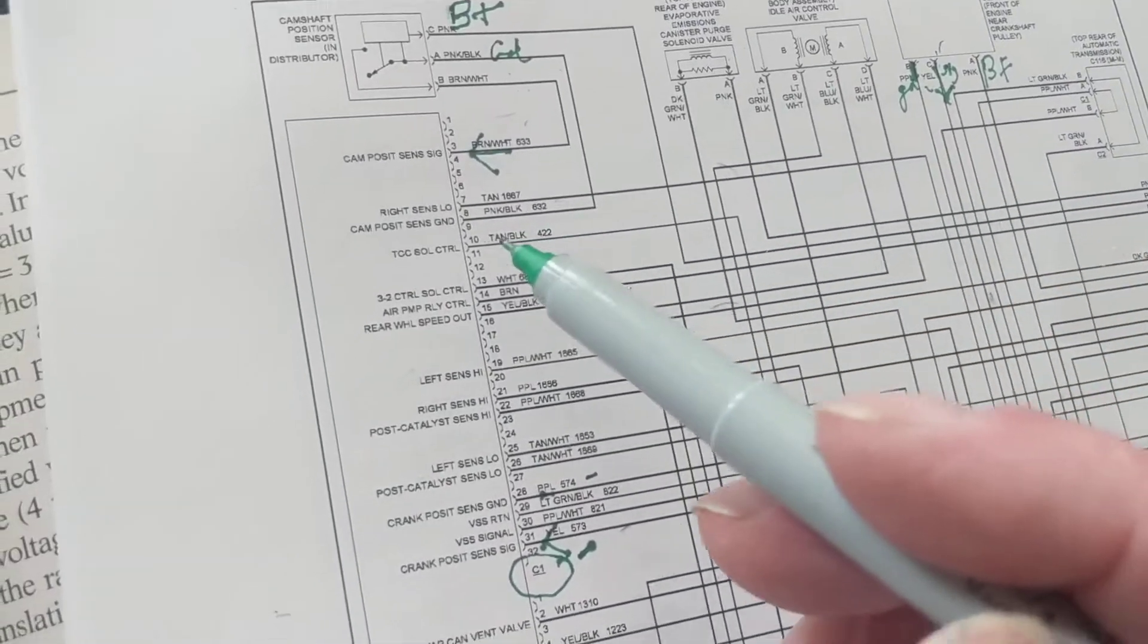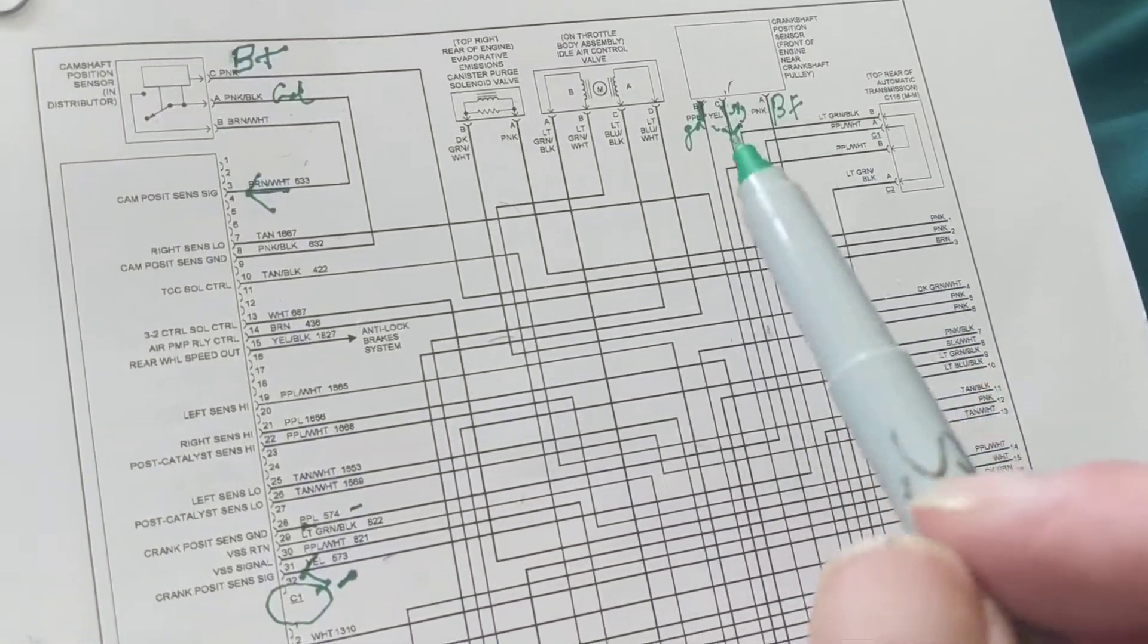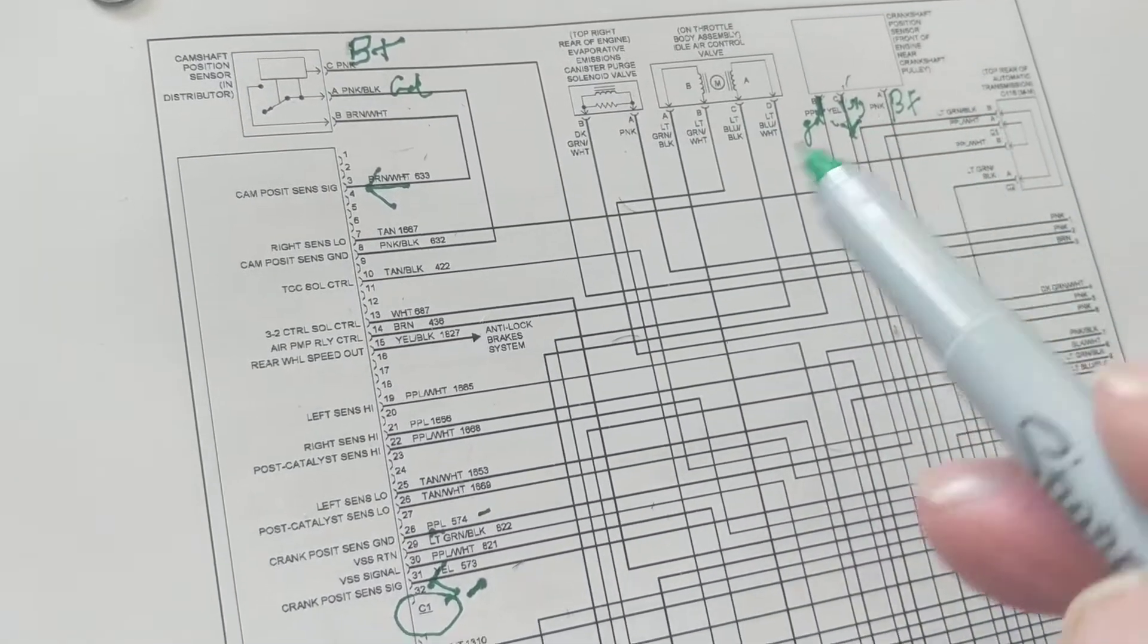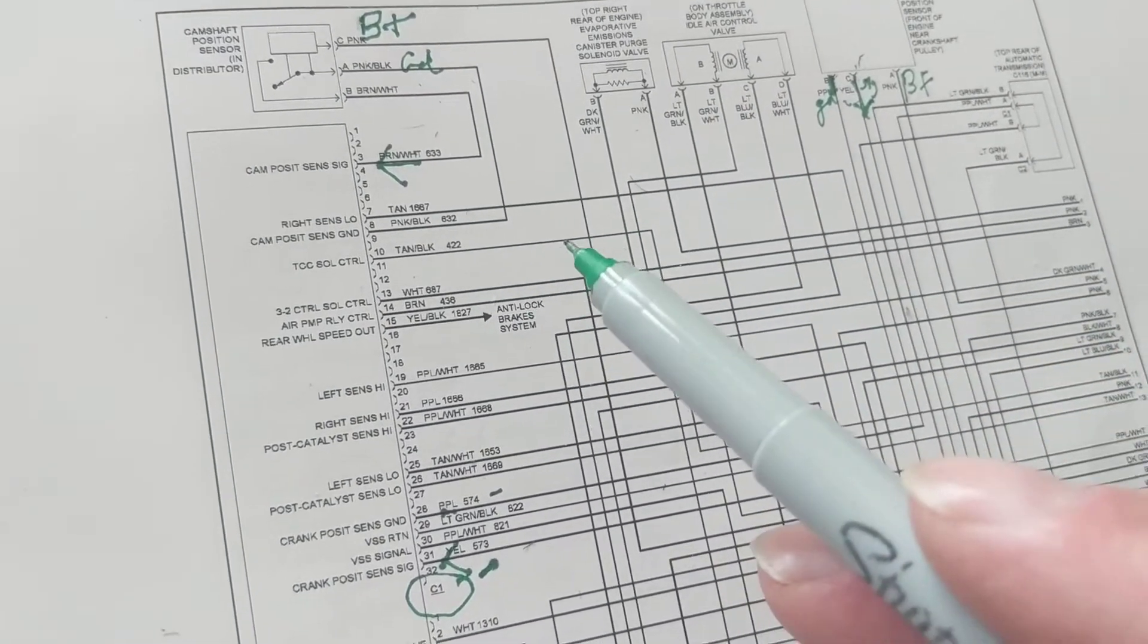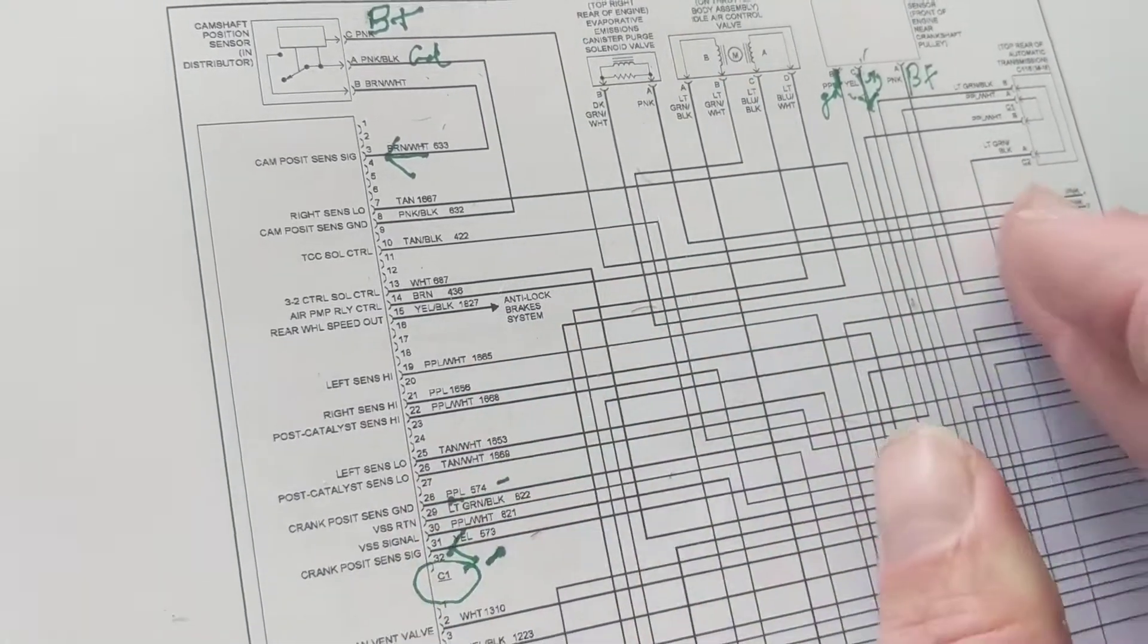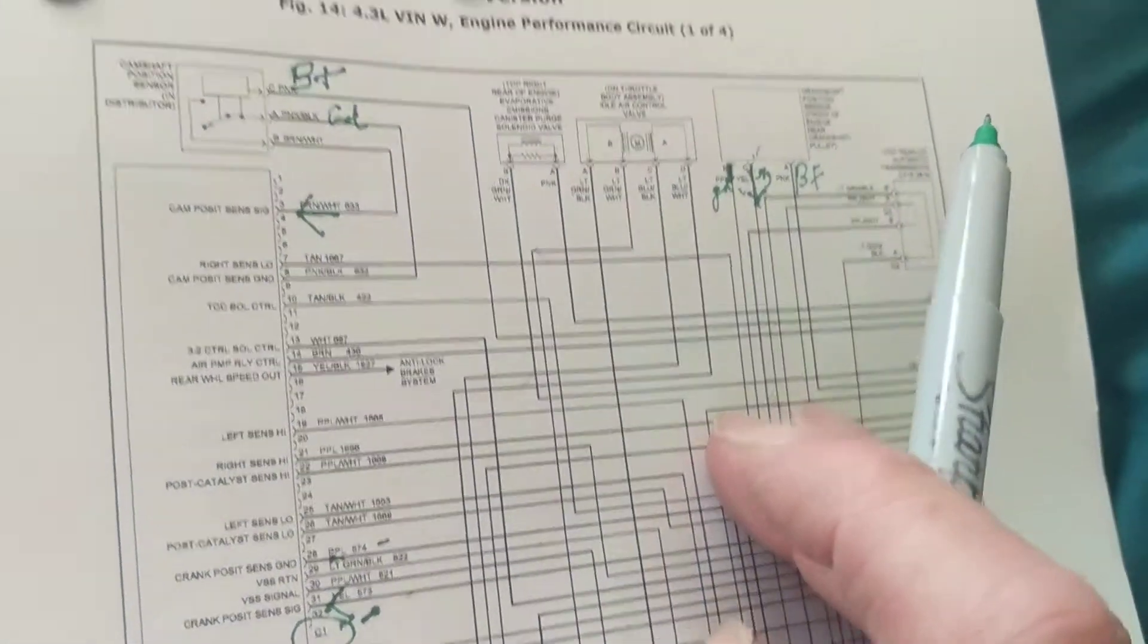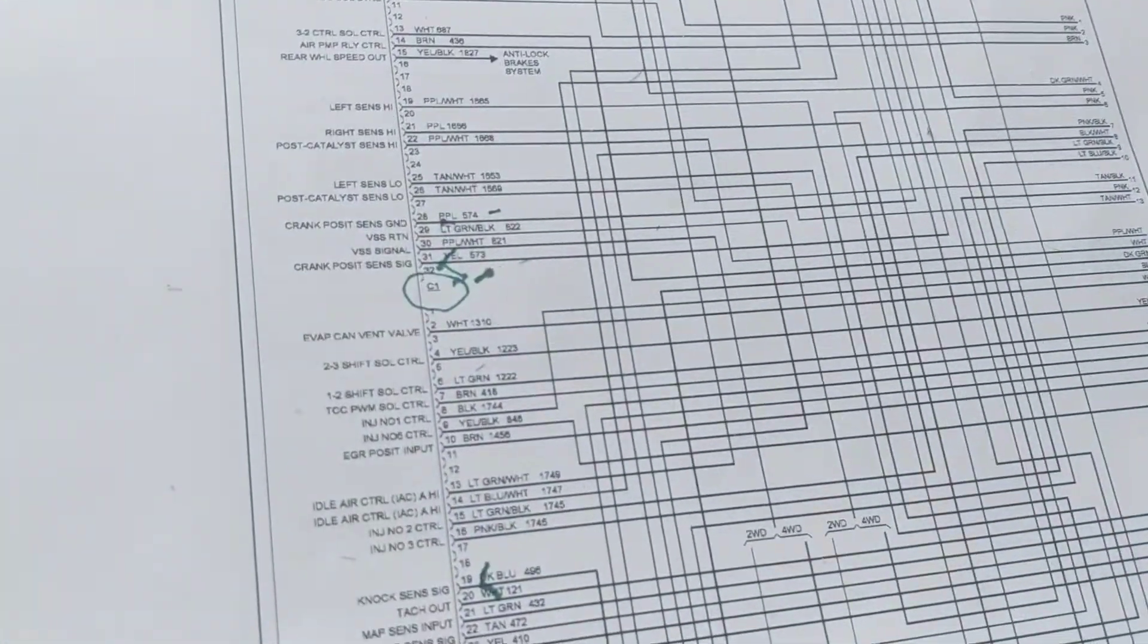What do I do first? I find a fuse that goes to it. In this picture over here, there are no fuses, so you know this is not the B+ line. This has to do with the sensors that go to it. There's another page to it.